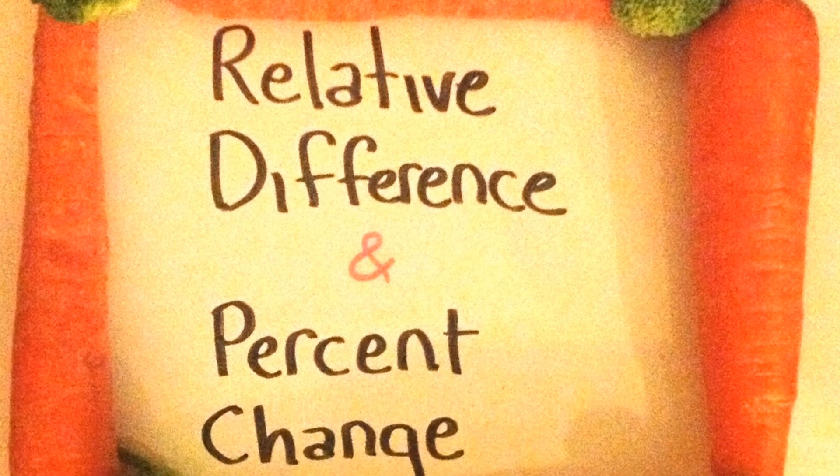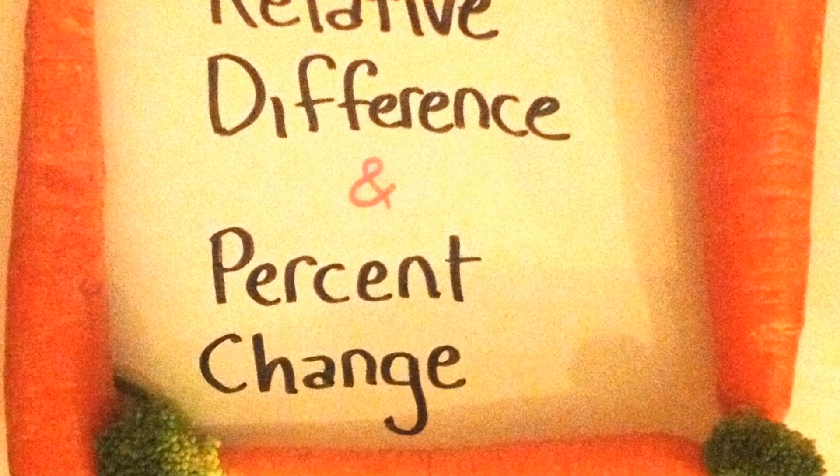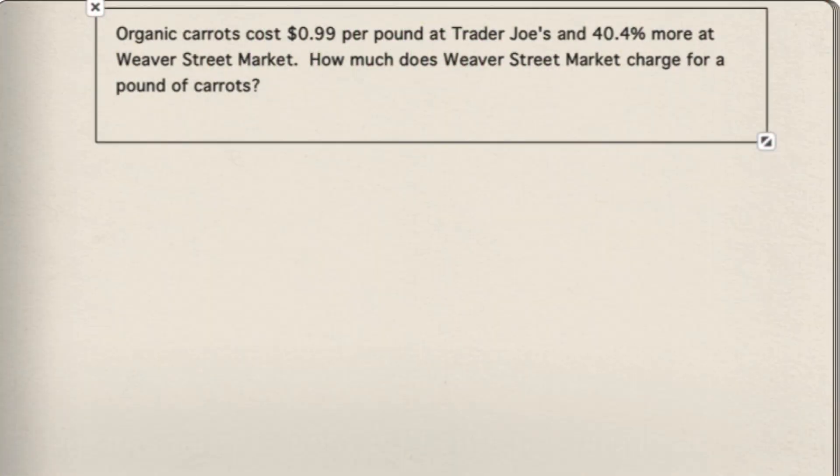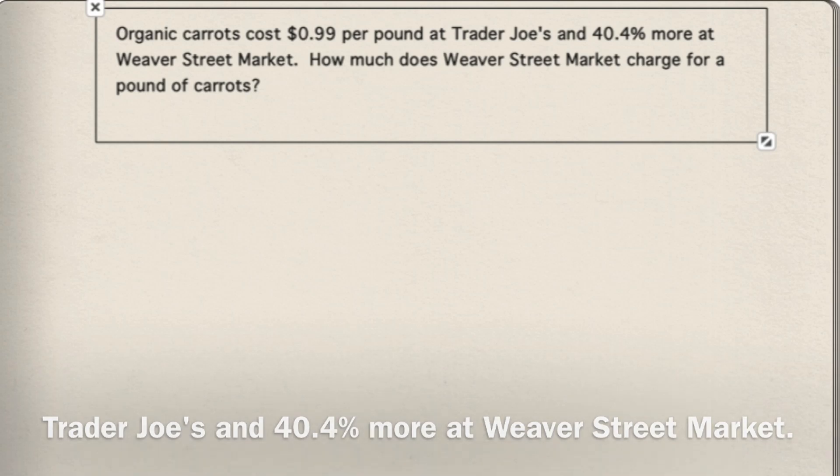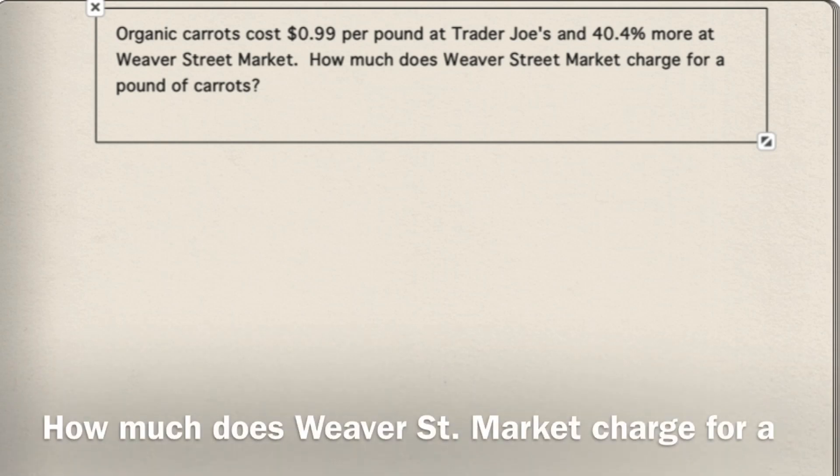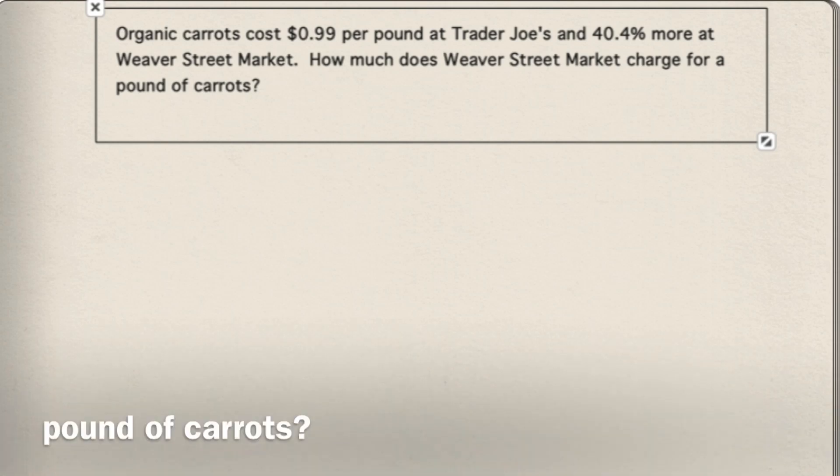Relative Difference and Percent Change. Organic carrots cost 99 cents per pound at Trader Joe's and 40.4% more at Weaver Street Market. How much does Weaver Street Market charge for a pound of carrots?